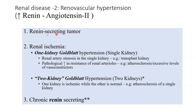Angiotensin 2 increases total peripheral resistance — the direct action is a rise in arterial blood pressure — and then there is a delayed component via aldosterone-mediated fluid retention. This causes sustained chronic hypertension. The patient will present with sustained high blood pressure over months, will need quick treatment, and imaging will reveal the tumor.